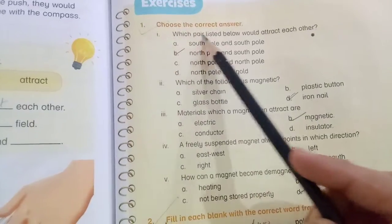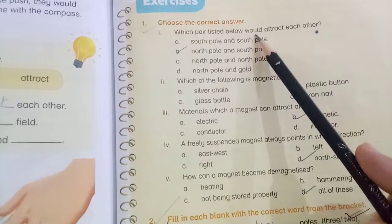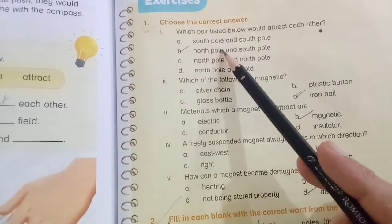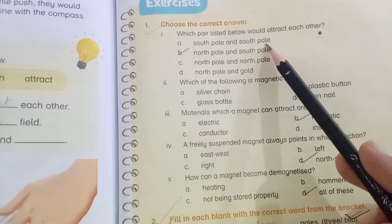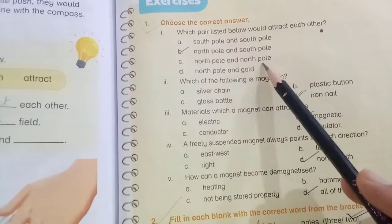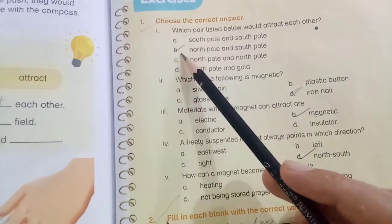Choose the correct answer: which pair listed below would attract each other? The options are: south pole and south pole, north pole and south pole, north pole and north pole, north pole and gold. And B is the correct answer: north pole and south pole.